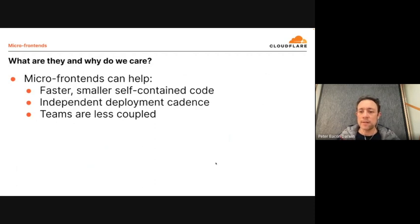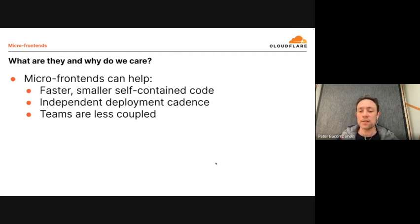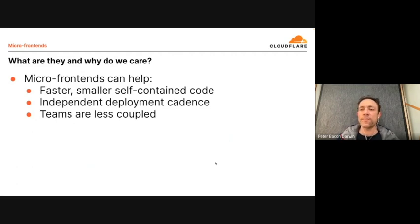Micro front ends could possibly be a solution to this. They come from an idea that's been around for a long time in the backend — microservices. The idea is to split your application into smaller pieces that are decoupled from each other. Each piece can be executed and deployed separately, so teams are less coupled. A classic example is that if a team rolls out a new version that breaks something, they can quickly roll back that one small piece without affecting other teams.